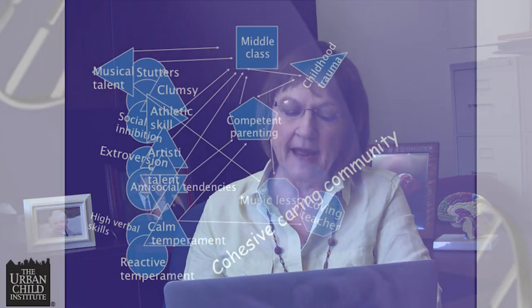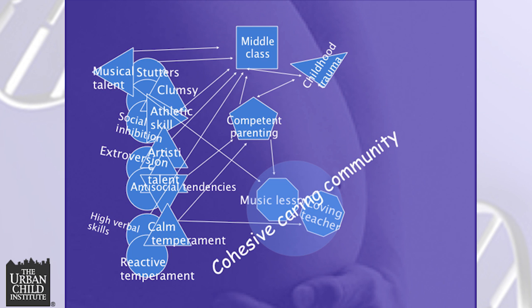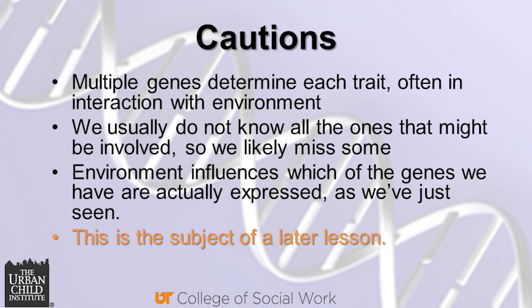Look at the child in a middle-class, advantaged neighborhood with competent parenting. There is no guarantee of good outcomes, of course, but don't the possibilities look better? To repeat — because it's so easy to get confused — multiple genes determine each trait in interaction with the environment. We usually don't know which genes are involved, or all of them. The environment influences which genes we have are actually expressed, and soon we'll talk about how that happens — it's a purely biochemical process.